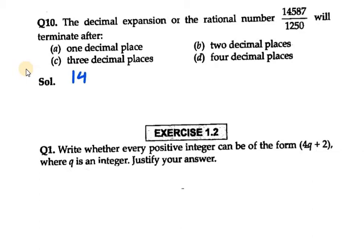So we have the number 14587 over 1250. Now, when taking the prime factors of 1250...